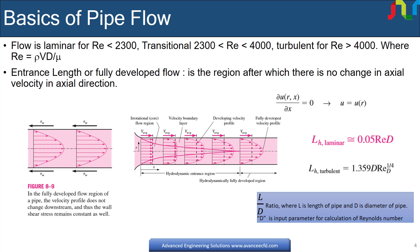For internal flow, flow is said to be laminar if Reynolds number is less than 2300, transitional when it is between 2300 and 4000, and flow is turbulent if Reynolds number is greater than 4000.